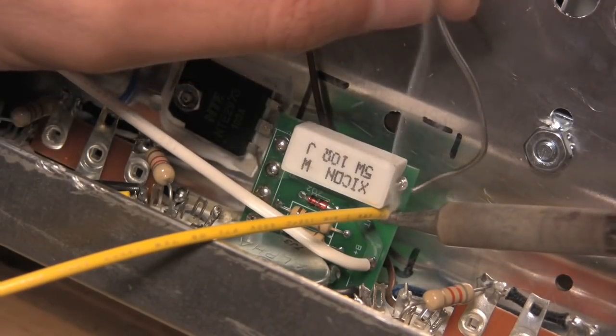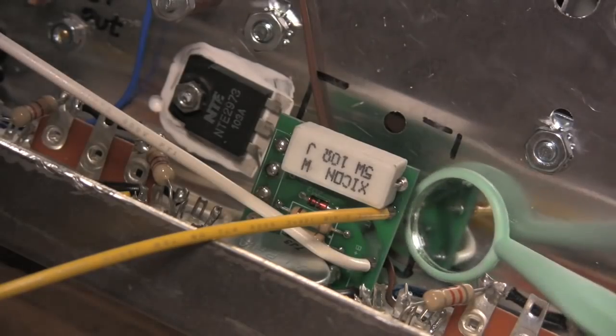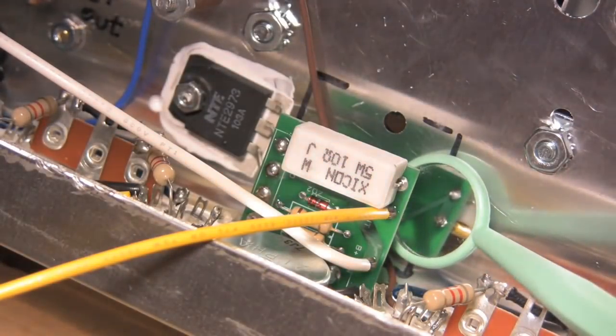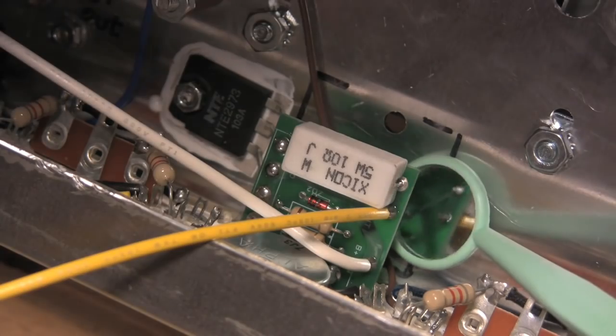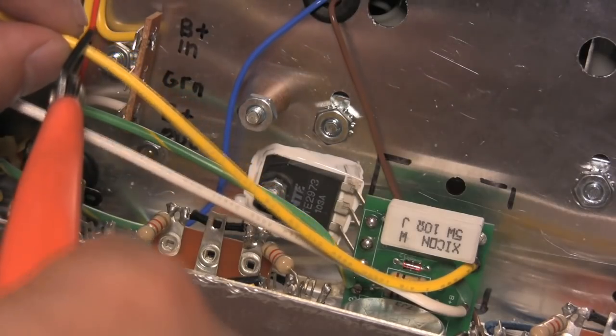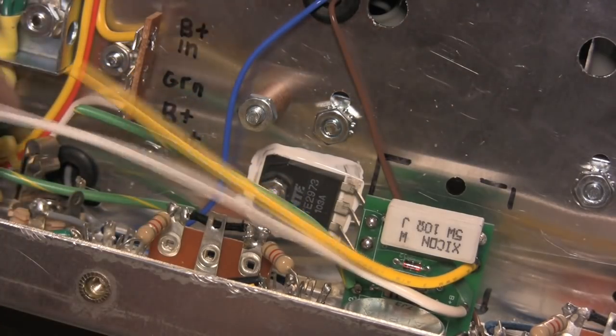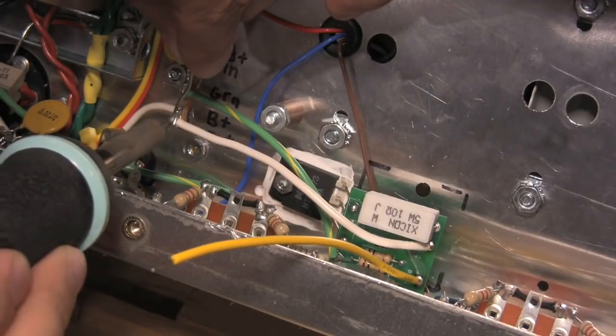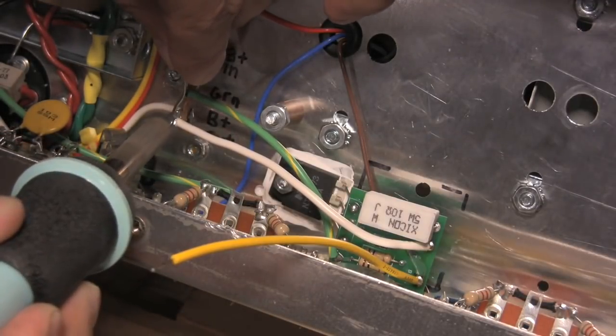Solder the board leads first. Make sure you have a good solder joint by inspecting underneath the board with a mirror. Cut the leads to length and finally solder them to the terminal. Make sure you have all three wires.